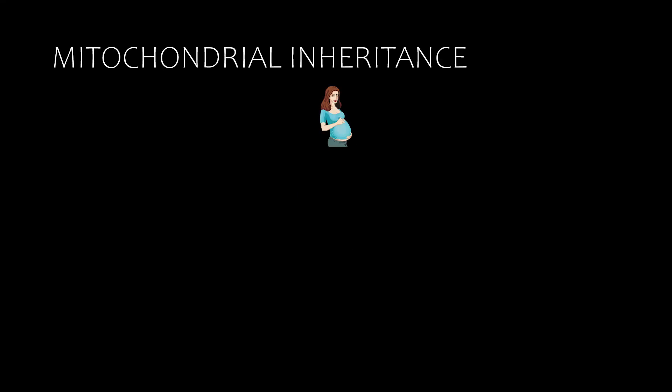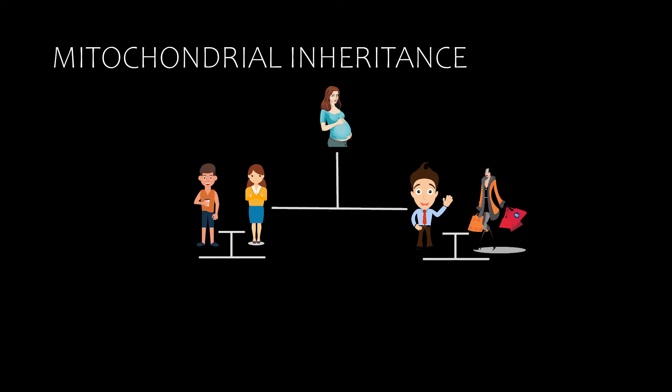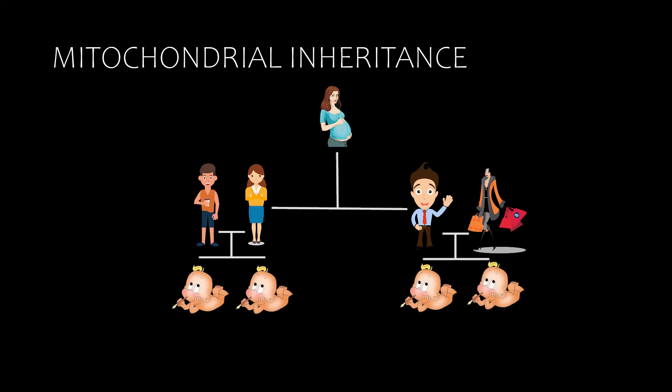Mitochondrial inheritance is maternally derived, which means that if an affected female has offspring, then all offspring will carry that condition. This is because mitochondrial DNA is inherited through the mother only, not through the father.